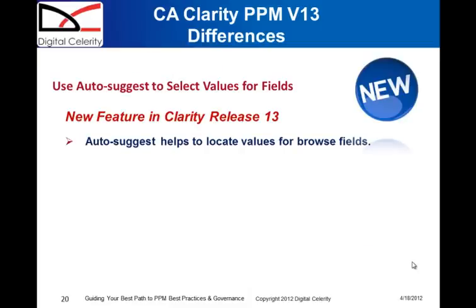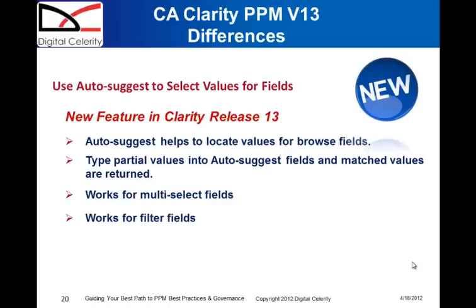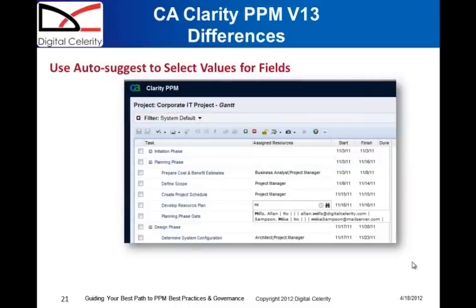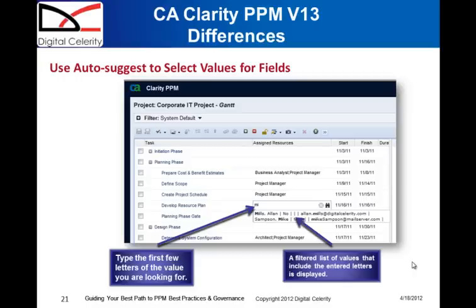Another feature in Clarity version 13 is Autosuggest. It helps you locate values for browser fields — you type in partial values into the Autosuggest fields and matching values are returned. It also works for multi-select fields and filter fields. Basically, you type in the first few letters of a value you're looking for, and a filtered list of values that include those entered characters is displayed.